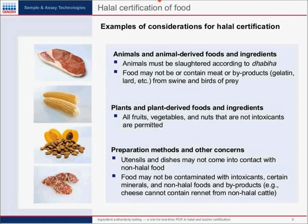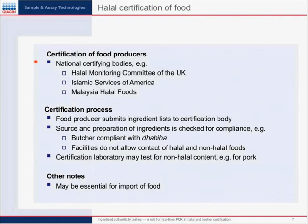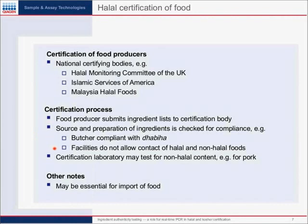How is food certified halal? Food producers are certified halal by national certifying bodies. For instance, there is a Halal Monitoring Committee of the United Kingdom, the Islamic Services of America in the United States, and Malaysia Halal Foods — just a few examples among many throughout the world. The certification process involves the food producer submitting an application and ingredient list to the certification body. The source and preparation of the ingredients is checked for compliance — for instance, that the butcher and the meat are compliant with the religious rules, and that facilities do not allow contact of halal and non-halal foods. Occasionally, a certification laboratory may test for non-halal content, for instance, for pork.